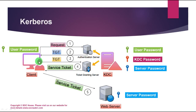In the second step, the client sends the TGT ticket to the Ticket Granting Server to request access to server services. The TGS server checks the TGT, approves the user request, and provides a service ticket in response. Finally, the client uses the service ticket and sends it to the server where the resource exists to access those resources. This is how the Kerberos authentication protocol works.